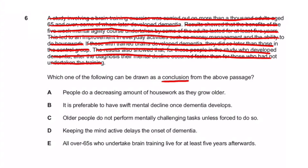Looking at the answer options: A says 'people experience a decrease in amount of housework as they grow older' — nowhere in the paragraph does it say anything about that, so it's wrong. B says 'it is preferable to have a swift mental decline once dementia develops' — it talked about dementia but said nothing about preferring a swift decline. Remember, with these questions you don't bring in external information: if it's not on the page, it's not the answer.